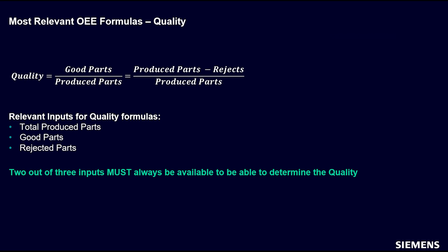The last OEE-relevant KPI is Quality — the simplest of the three. Quality = Good Parts / Produced Parts, or equivalently, (Produced Parts − Rejects) / Produced Parts. For the quality KPI, you need access to total parts, good parts, and rejected parts from the machine. You will always require at least two out of the three values, because the third can always be calculated from the other two. Good parts can be derived by subtracting rejected parts from total parts, and total parts can be represented by the sum of good parts and rejected parts.